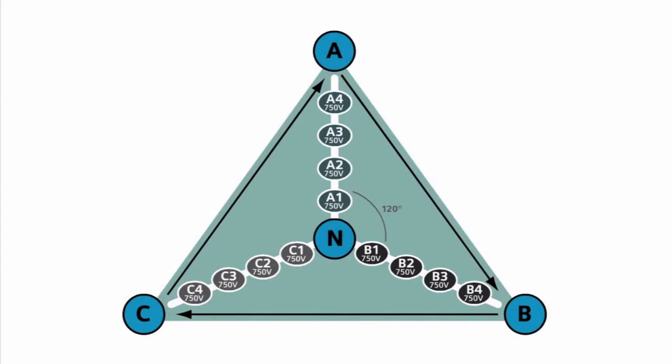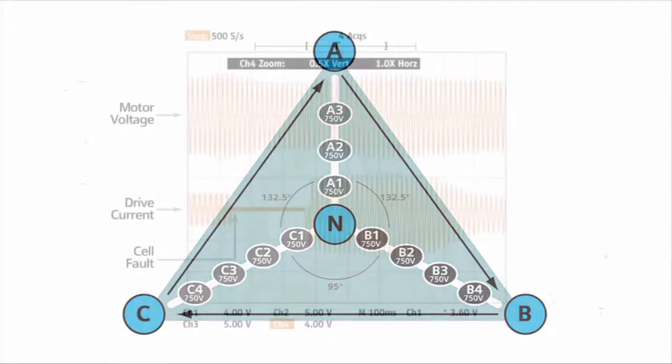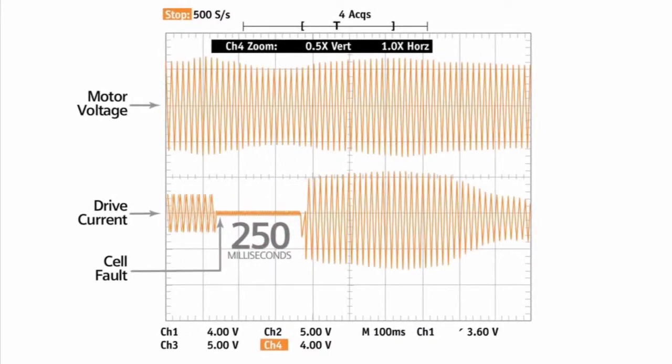Following cell bypass, the other cells remain active. The neutral point shifts in order to produce a balanced output voltage to the motor. With one cell in bypass, the drive still produces sufficient voltage for the process to continue uninterrupted. The quality of the voltage waveform remains virtually unchanged.